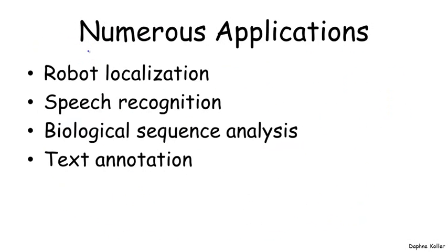This kind of structure is useful for a broad range of applications: robot localization, speech recognition where HMMs are the method of choice for all current speech recognition systems, biological sequence analysis such as annotating a DNA sequence with functionally important elements, and annotating text sequences with the role of words in sentences. All of these are methods where hidden Markov models have been used with great success.